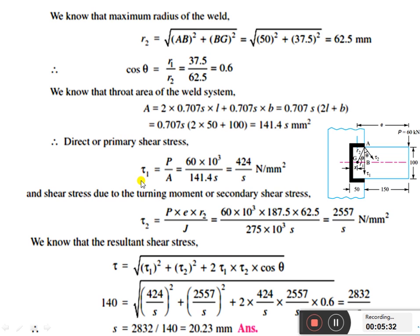We found τ₁ and τ₂. We know that the resultant shear stress τ equals the square root of τ₁² plus τ₂² plus 2τ₁τ₂ cos θ. The theta value we already found, cos θ is 0.6, τ₁ equals 424 divided by s, and τ₂ equals 2557 divided by s.